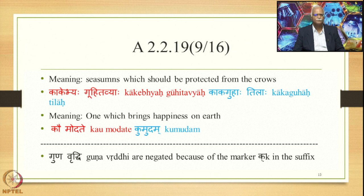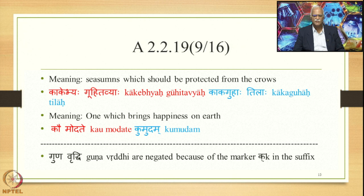Another example: seasons which should be protected from the crows is the meaning, giving Kake Guhitavya as input and Kake Guha as the output generated by adding suffix Ka. Similarly, 'one which brings happiness on earth' — Ka U Modate — in this sense the word Kumuda gets derived. Guna and Vriddhi operations are negated in these cases because of the marker Ka on the suffix, through the Sutra Kniticha.